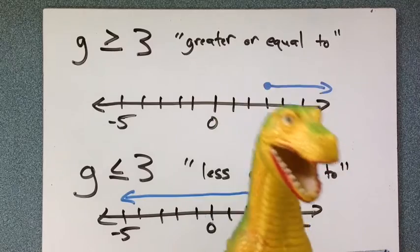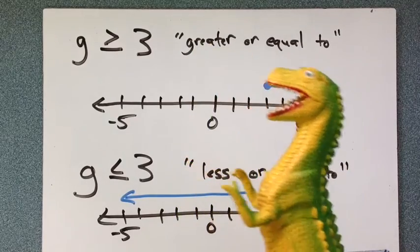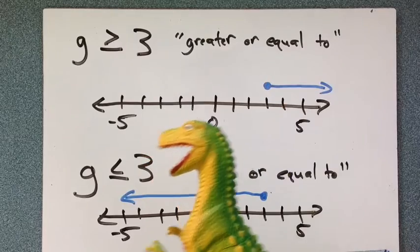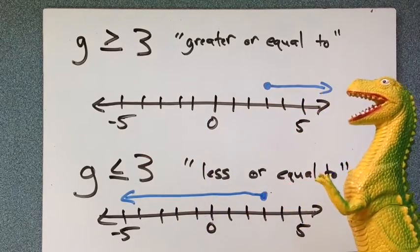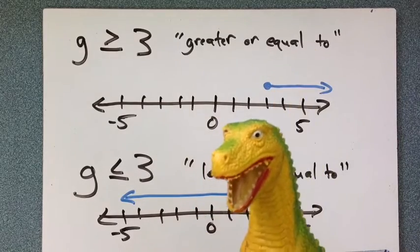So G is greater than or equal to 3. G can be 4, 5, 700,000, or 3. Same thing here. G is less than or equal to 3. Less or equal to. That includes 3 and all values less than 3.